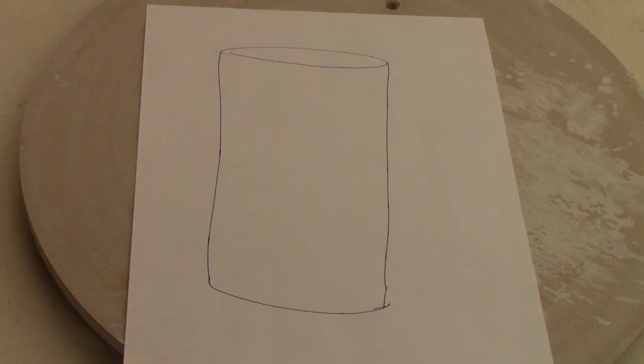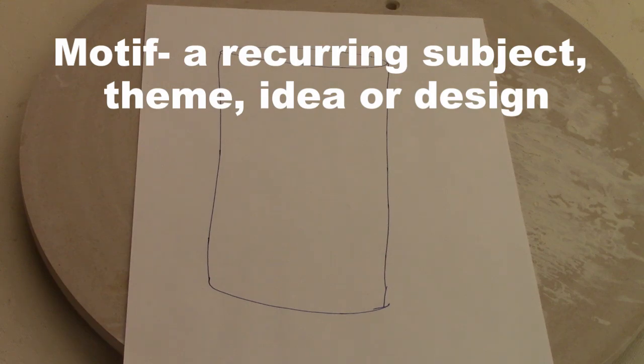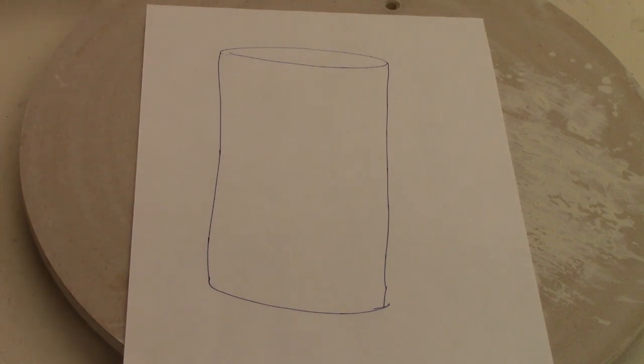In this video you will learn how to make a decorative coil pot. Your coil pot will be decorated with motifs. In this case, a motif is a reoccurring subject, theme, or idea. It will be a specific design that will be repeated throughout your pot.